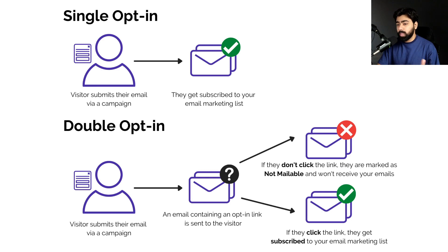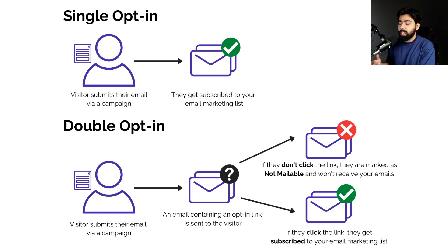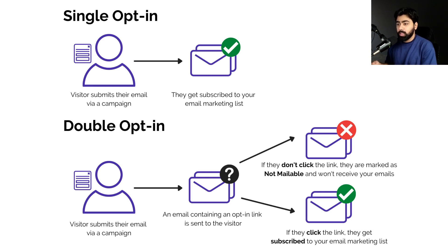With double opt-ins, we can actually filter through that. When somebody submits a form, you send out an email with a link for them to click — something like 'Thank you for taking interest, please click here to confirm your subscription.' When they click on that, you confirm they are a verified subscriber, giving you a well-filtered list of people to send email newsletters or campaigns to.